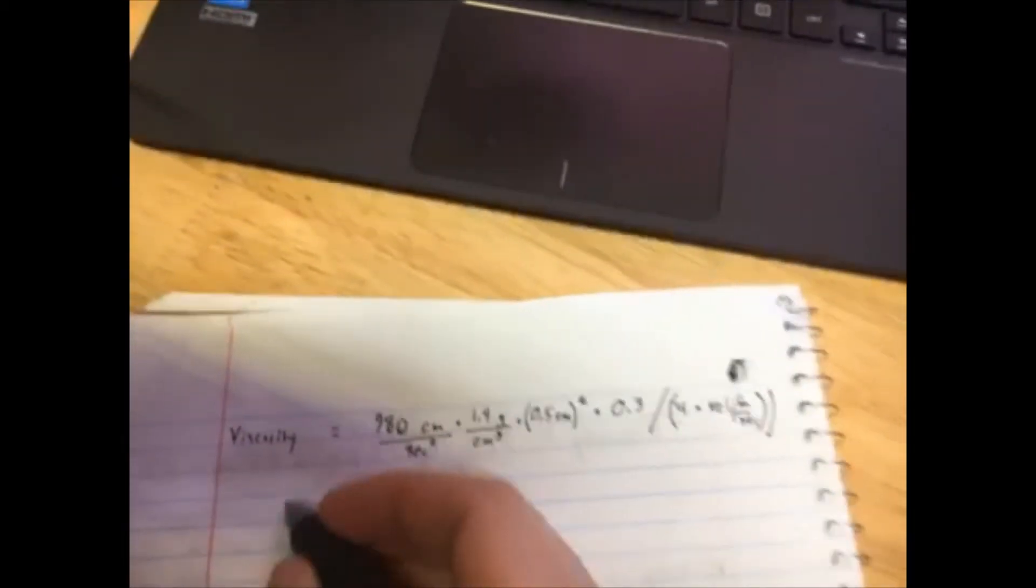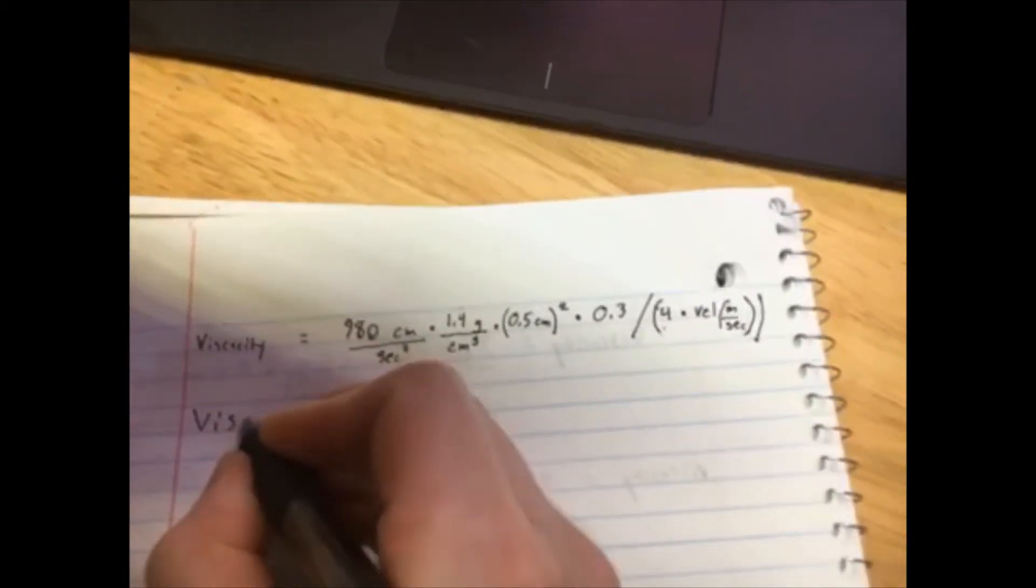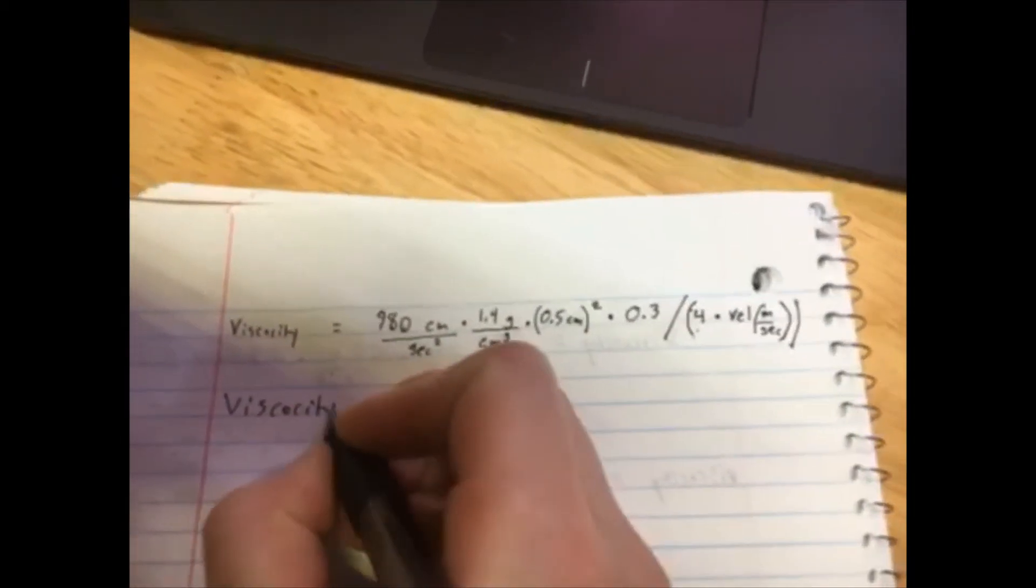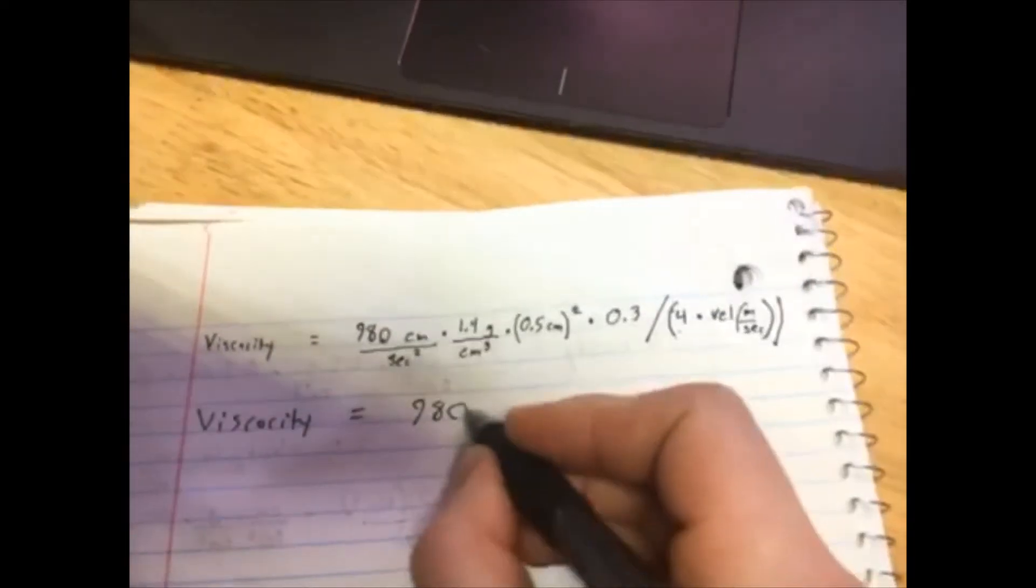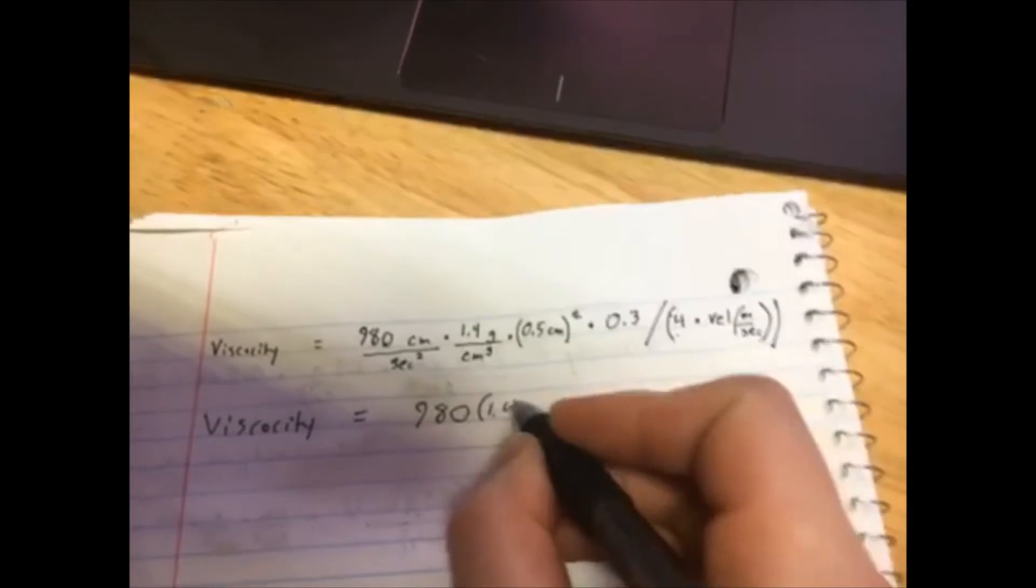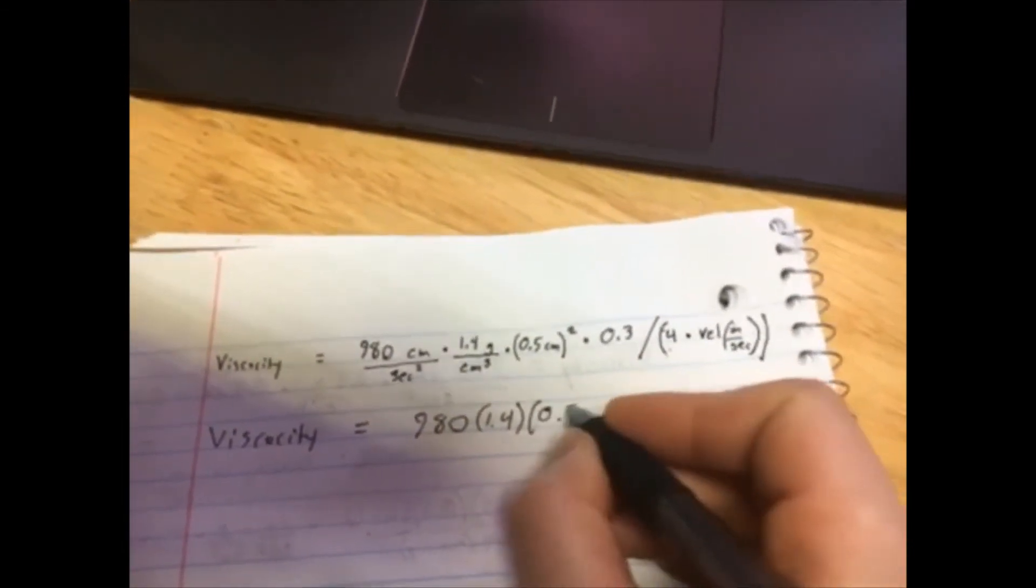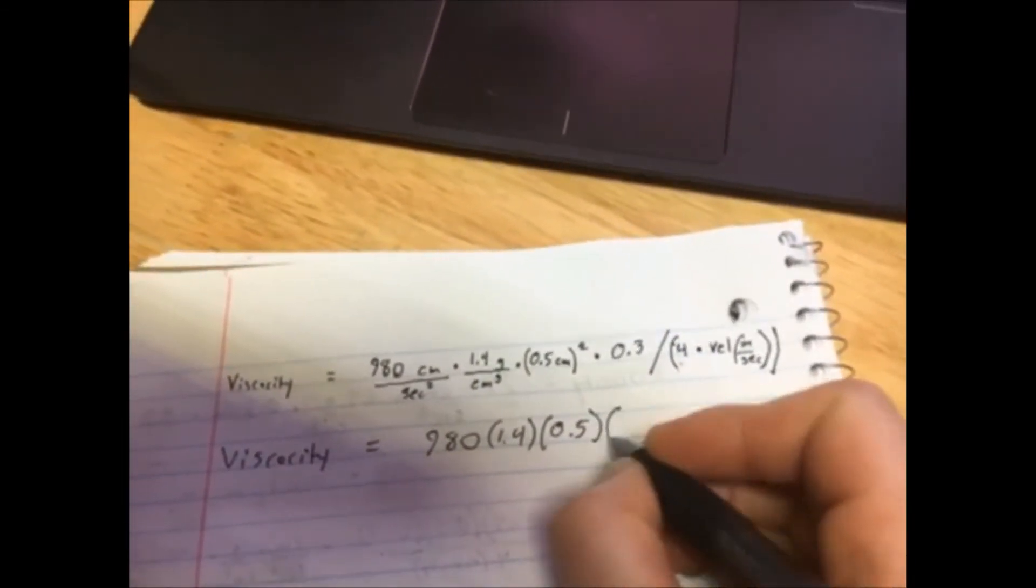So if you separate the units and the numbers, you get the viscosity equals 980 times 1.4 times 0.5 times 0.5 times 0.5 times 0.3